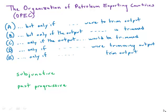For this one about OPEC, we're going to talk about various forms of verbs, including the passive, the subjunctive, and the past progressive. If these terms are unfamiliar to you, I'd highly recommend checking out Magoosh. Magoosh has over 200 GMAT videos that will give you all the content and strategy you need, including a long section teaching you all the grammar you need for sentence correction.